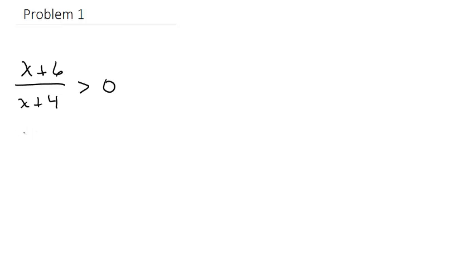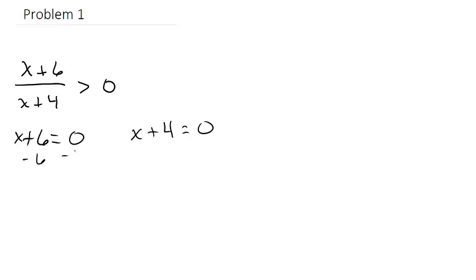So we take x plus 6 equal to 0 and x plus 4 equal to 0. Subtracting 6 from both sides we get x equals negative 6. For the denominator, subtracting 4 from both sides, we get x equals negative 4.